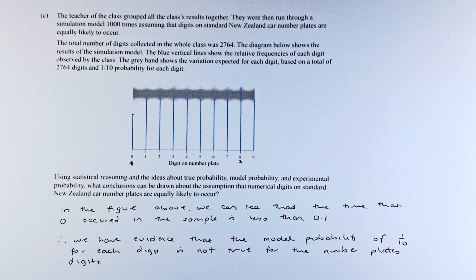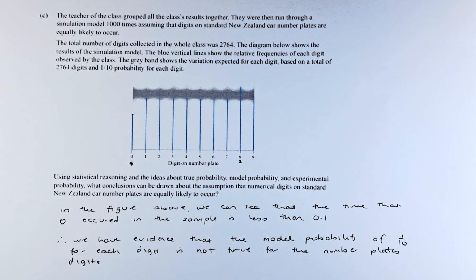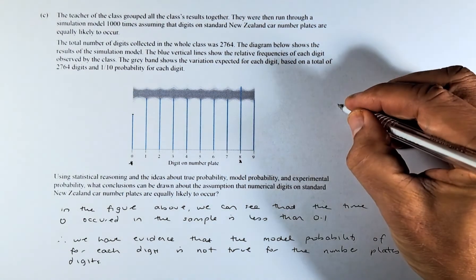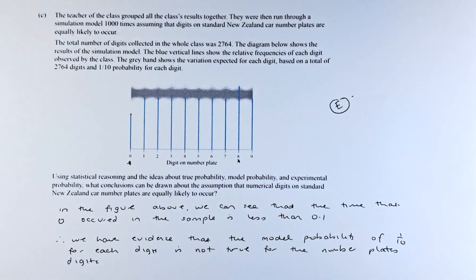Remember, not true for the number plate digits in New Zealand car number plates. So if you can answer that, they get an excellent and an E7 in this paper.